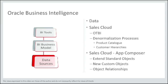There are a few things we can do to interact with this data before we run reports on top of it. By denormalizing the product catalog, we will be able to make reports on top of the product hierarchy much more easily, and the same is true for the customer hierarchies — we denormalize them for faster report building and execution. Another way of interacting with the data source is through the Sales Cloud App Composer, which allows us to extend standard objects by adding fields, or by building whole new custom objects and building relationships between them.